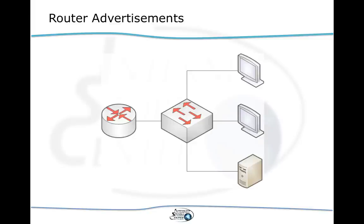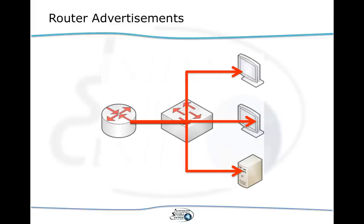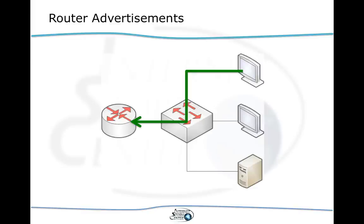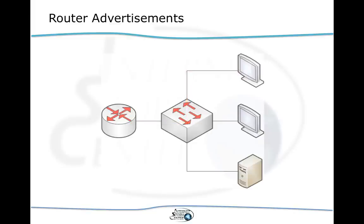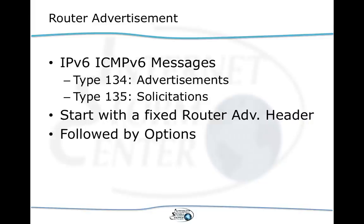For IPv4 we usually use DHCP to assign addresses. We still have this option in IPv6, but more likely you're going to find router advertisements. A router will send these advertisements periodically to all hosts on the local network, or the host may send a router solicitation which the router responds to with a router advertisement directed at that host. These router advertisement messages are ICMPv6 messages with a type of 134; solicitations use a type of 135.